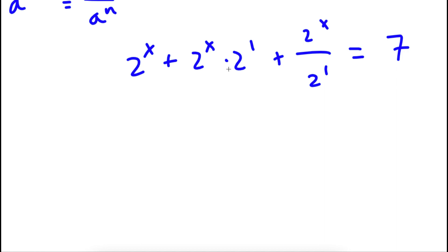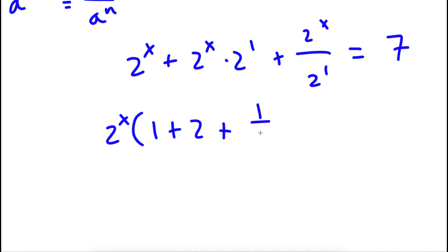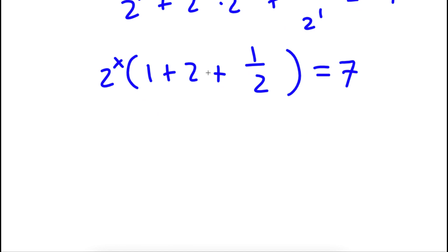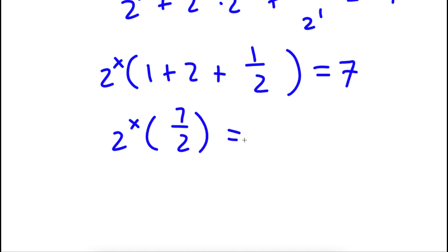Now, if I factor out 2 to the power of x from my left hand side, I get 2 to the power of x times 1 plus 2 plus 1 over 2, and this is equal to 7. Now, 1 plus 2 is 3, and 3 plus 1 half is 7 over 2.